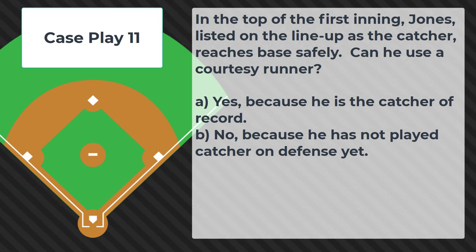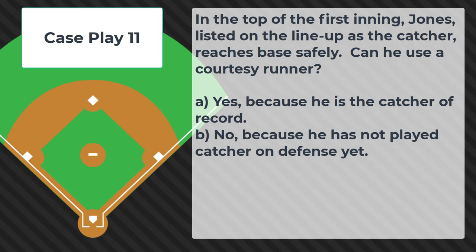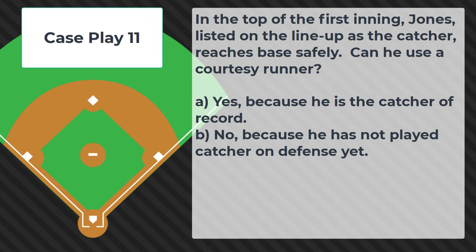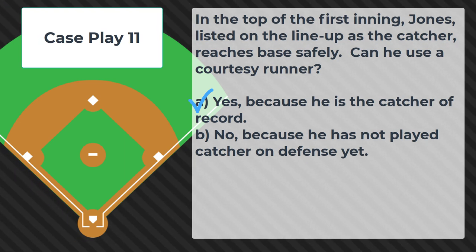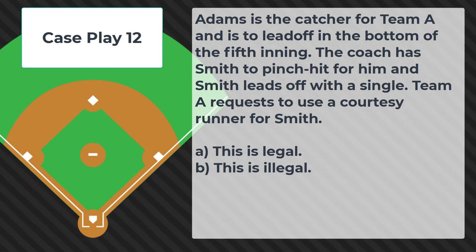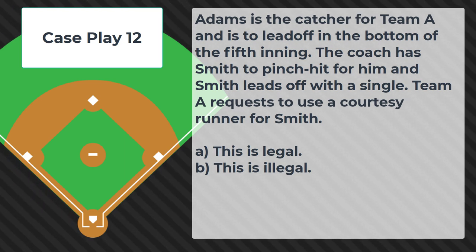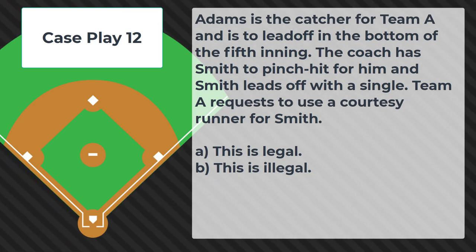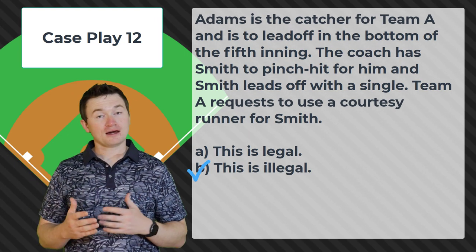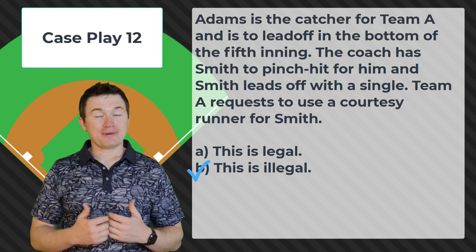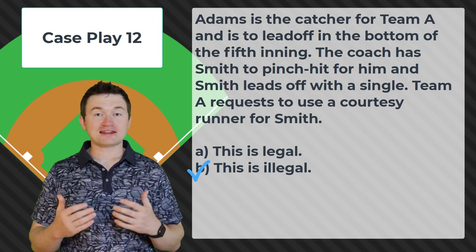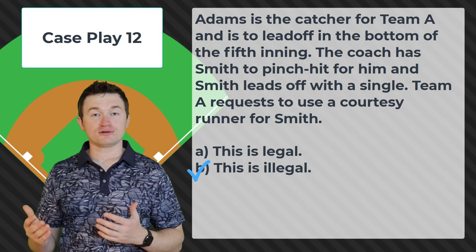Case play number eleven: in the top of the first inning Jones, listed on the lineup as the catcher, reaches base safely. Can he use a courtesy runner? Yes — as long as he is listed as the catcher on the lineup turned in at the plate meeting, he can have a courtesy runner. Case play number twelve: Adams is the catcher for team A and leads off in the bottom of the fifth. The coach sends Smith to pinch hit, and Smith singles. Team A requests a courtesy runner for Smith. This is illegal — Smith has not played defense yet and is only a pinch hitter, so even though they may play catcher they are not the catcher of record and cannot have a courtesy runner.